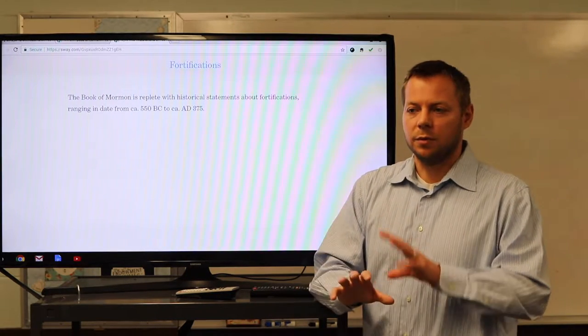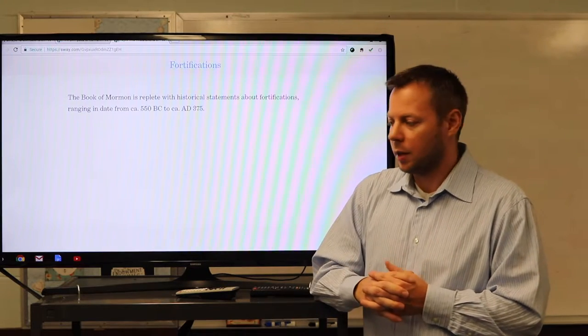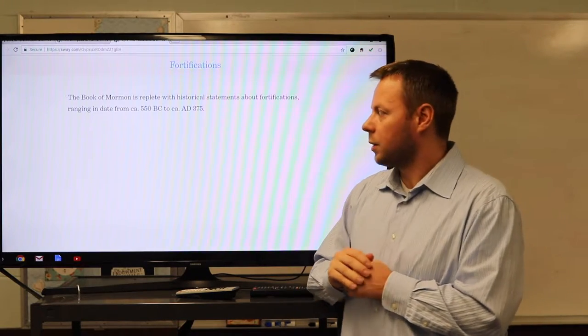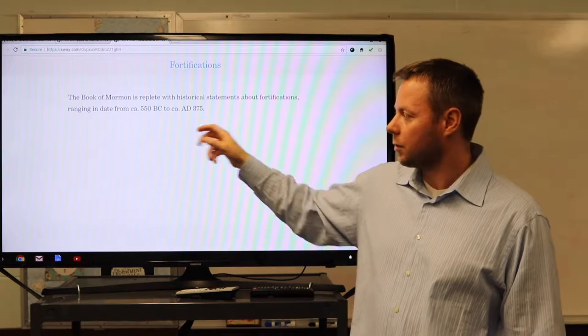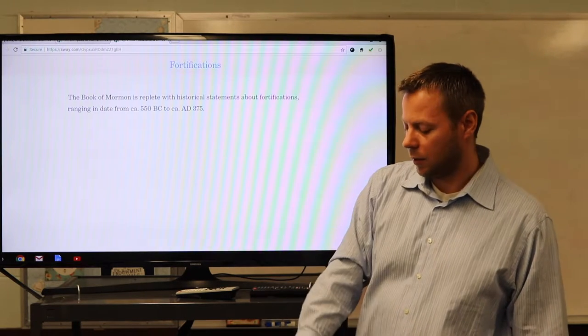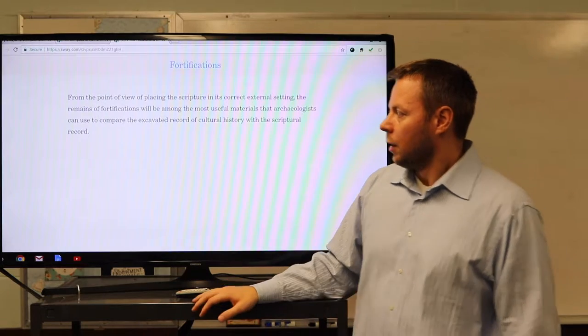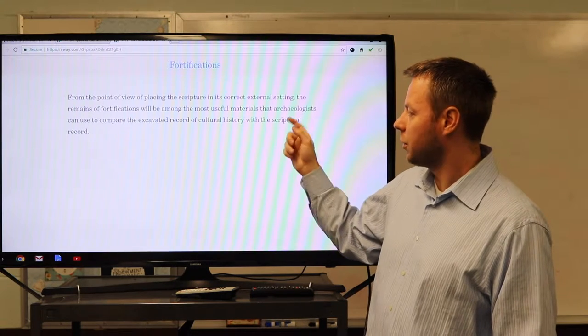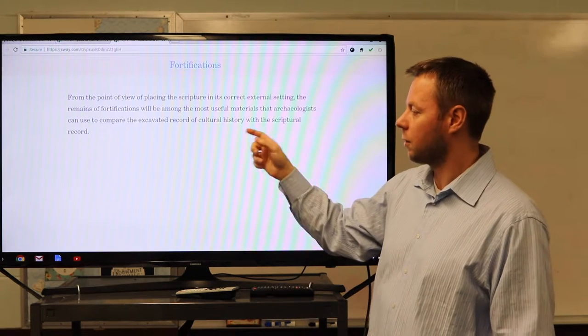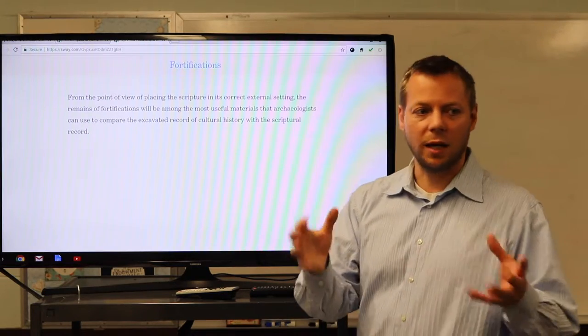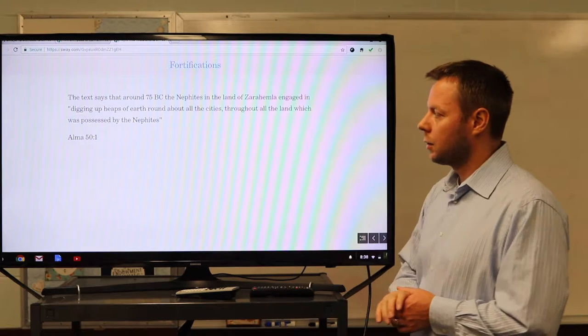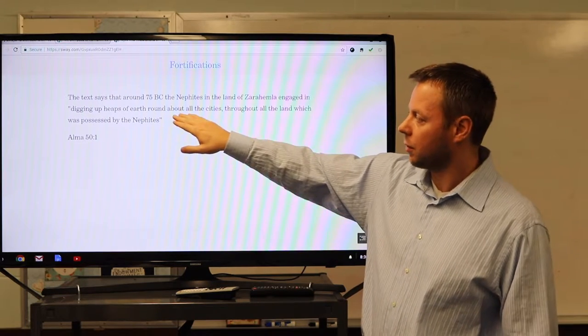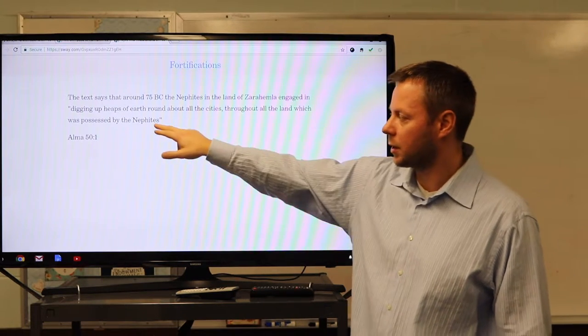So I wanted to throw those last two things in terms of, there's one more criticism and a little bit more context around arrows thrown, and then move to fortifications. So the book is obviously replete with historical statements about fortifications, fortifications ranging in date from about 550 BC to AD 375. From the point of view of placing the scripture in its correct external setting, the remains of fortifications will be among the most useful materials that archaeologists can use to compare the excavated record of cultural history with the scriptural record. It's a great test for the book, right?